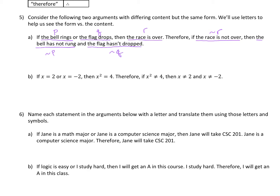So I can translate this. It says: if p or q, then r. Therefore — denoted with three dots in a triangle — if not-r, then not-p and not-q. The upside-down v represents or; the regular v is or and the upside-down v is and. The squiggly in front of a letter represents not.